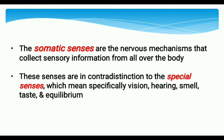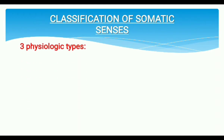Somatic senses are distinct from the special senses. The special senses include vision, hearing, smell, taste, and equilibrium — these are distinct from somatic senses. Now, about the classification of somatic senses: the somatic senses can be classified into three physiologic types.